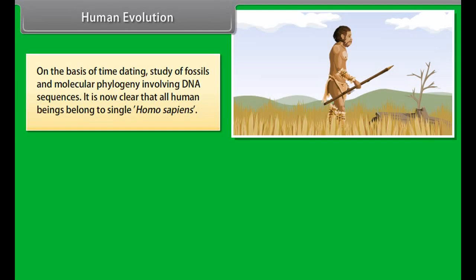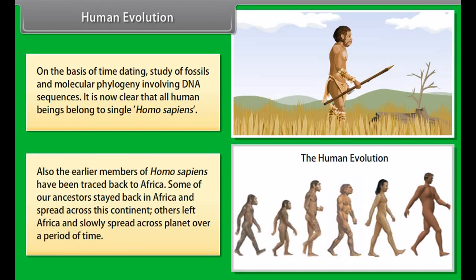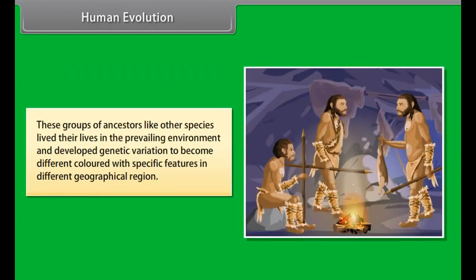A change that is useful for one property to start with can become useful later for a quite different function. For example, feathers can start out as providing insulation in cold weather but later become useful for flight. Some dinosaurs had feathers although they could not fly using them.